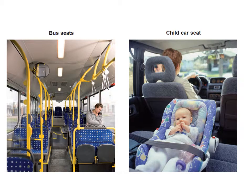This came up in a recent GCSE exam, and the reason behind this question was to make you think about fabrics being fit for purpose. Candidates were asked to look at two different types of seat and think about what they would be used for, who would be using them, how they would be used, and then think about suitable fabrics and fabric properties for these particular types of textile products.